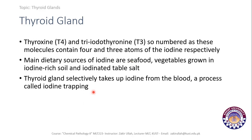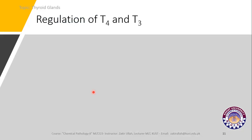The thyroid gland specifically and selectively absorbs iodine from the blood by a process called iodine trapping. When iodine is ingested in food, thyroxine screens the blood for iodine, and these iodine molecules are then trapped by the thyroid gland.